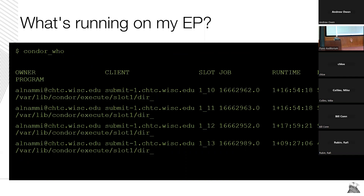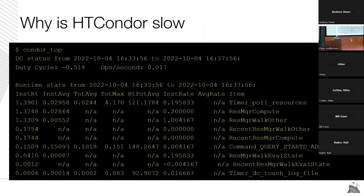condor_who is a very underutilized command — you run it on your execute point and it shows you all the jobs it knows about: their job IDs, how long they've been running, and their PID — not that you should ever kill them. A more advanced command is condor_top — we might ask you to run condor_top and send us the output. It's like top but prints HTCondor internal function names — we don't really expect people to understand it, but just know it's there in case something is misbehaving.